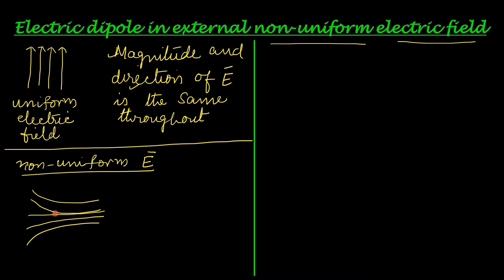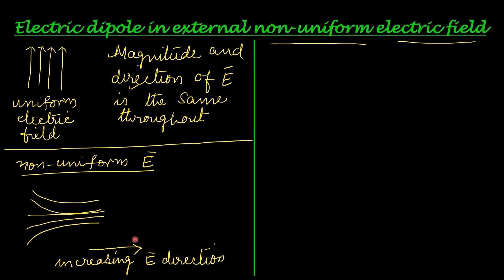Here the field lines are spaced apart, but at the other end they are crowded, so the electric field is less where they are spaced apart. For the sake of explanation, this non-uniform electric field is represented by an arrow-headed straight line, indicating an increasing electric field direction — the field is less at the tail of the arrow and more at the head. Further towards the right, field lines become more and more crowded. The direction also curves, so the direction is different across regions.